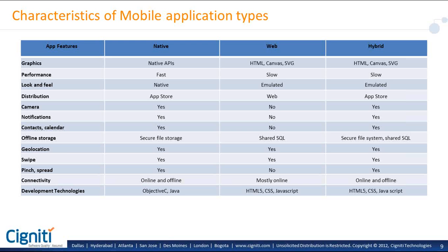But when it comes to mobile automation, you have to take the different types of applications that are in scope into consideration, along with factors like how your automation suite would handle when your hardware or native device is being rotated and the screen rotates. How does your script handle when you do a swipe operation?